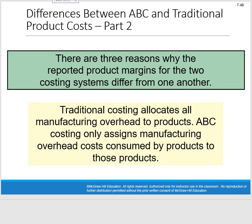All right, I'm back to wrap up the end of chapter 7. We just had a little technical glitch there, but we're almost done with chapter 7. Finally, a look at the differences between ABC and traditional product costing systems.